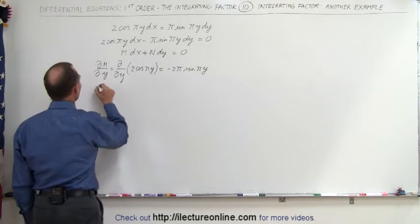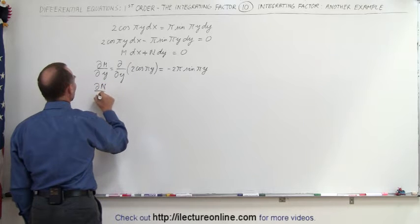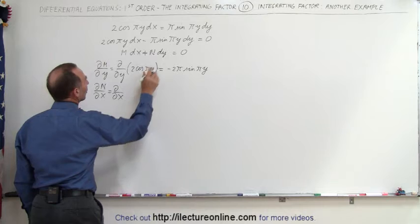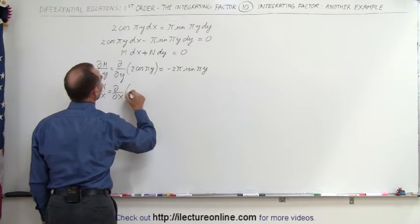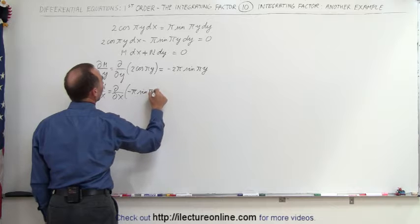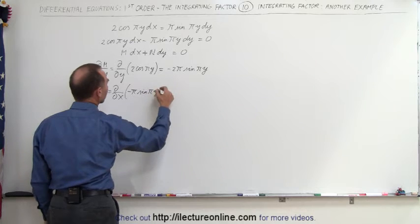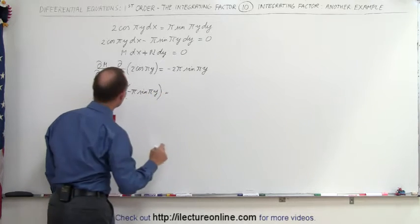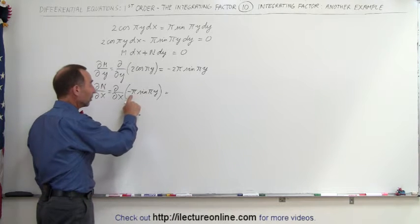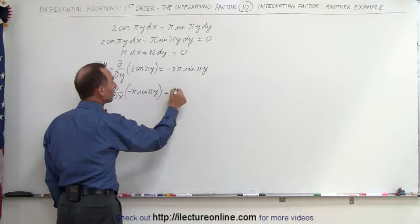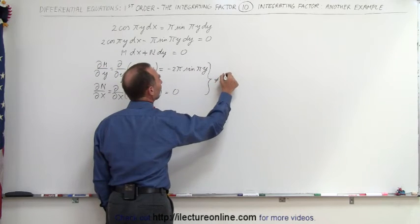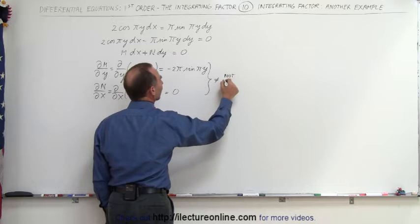Now we take the partial derivative of N with respect to x, which is the partial of minus π times the sine of πy with respect to x. Since there is no variable x in this expression, this is simply equal to zero. Since those two partial derivatives are not equal, we know the equation is not exact.